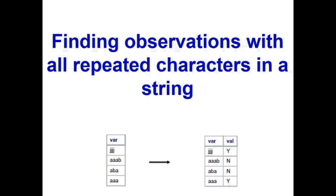Today's topic is about finding observations with all repeated characters in a string. We have a dataset with various observations. Some observations have all repeated characters whereas others do not. The goal is to identify which row has all repeated characters and create a new column marked as Y, else mark it as N.